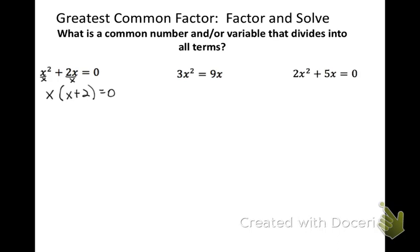Our directions say to factor, which is what we just did. When you factor something, you break it into what can multiply together to give you that expression. The second part of our directions says to solve. Now we're going to use that zero product property rule and set each of these equal to zero. Our two answers are when x equals zero and x equals negative two — this expression on the left side will equal zero.